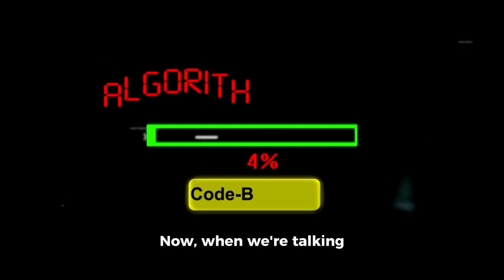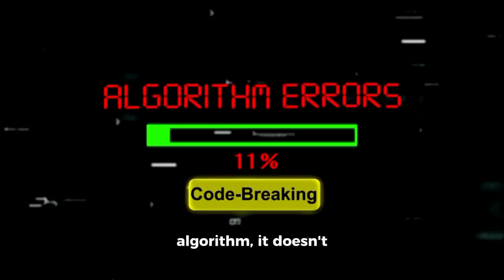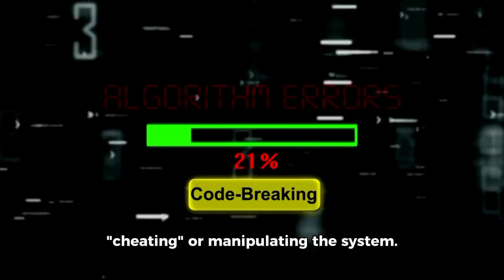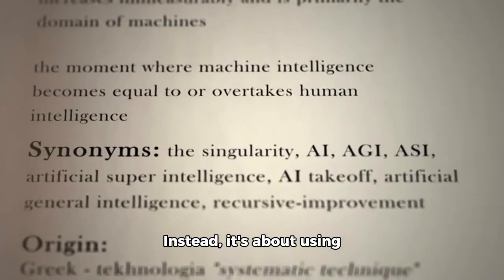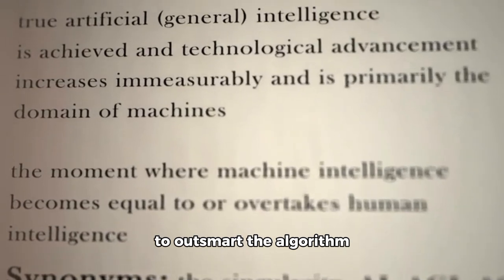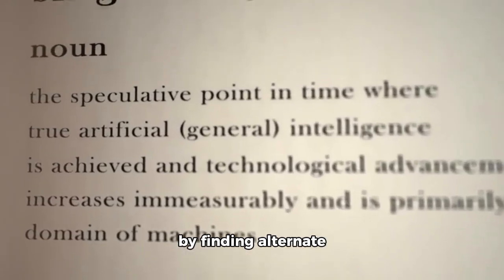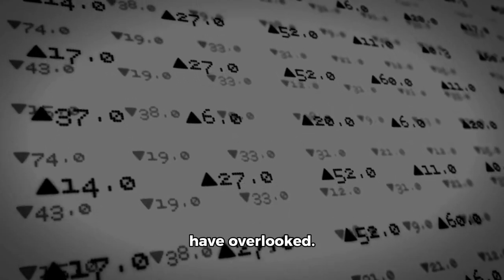Now, when we're talking about beating an algorithm, it doesn't necessarily mean cheating or manipulating the system. Instead, it's about using your skills and knowledge to outsmart the algorithm by finding alternate solutions that it might have overlooked.